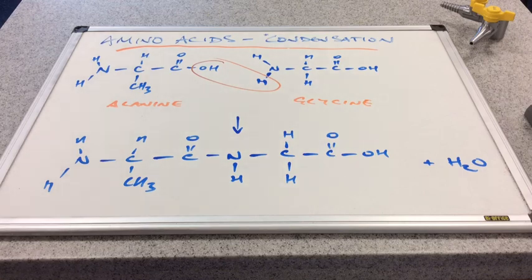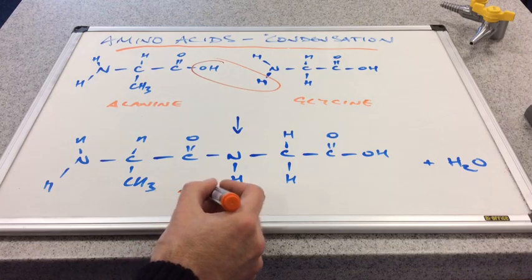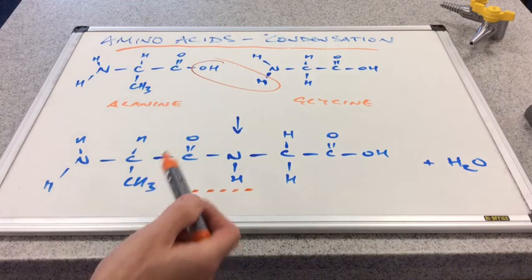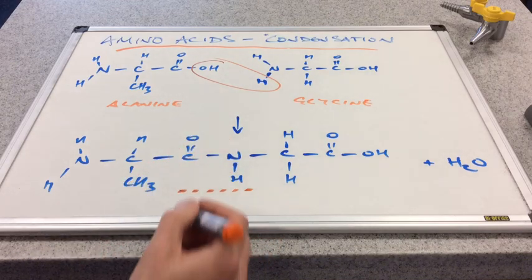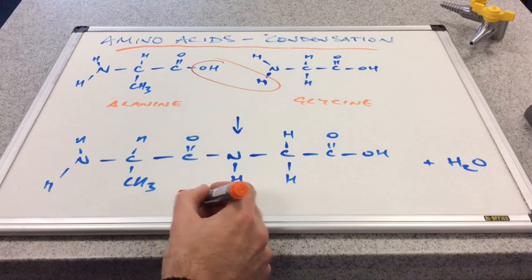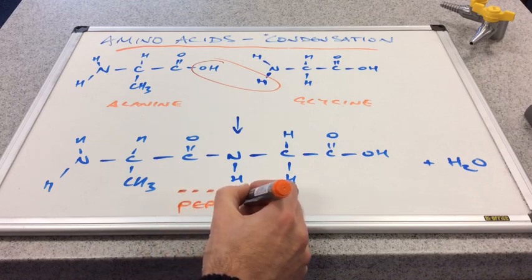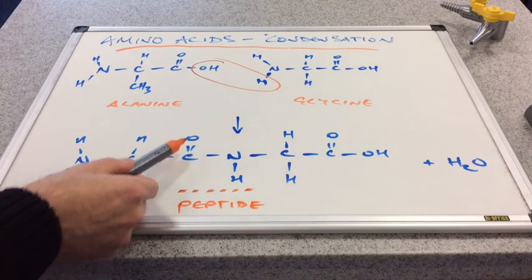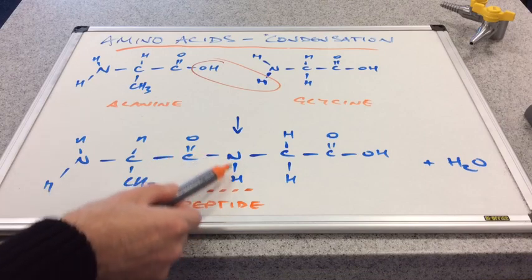Now I just want to point out an important feature within this molecule. I'll just put a dashed line there. This special group here, this linkage, is called a peptide. So the peptide bond or the peptide link is a C double bond O connected to an NH.